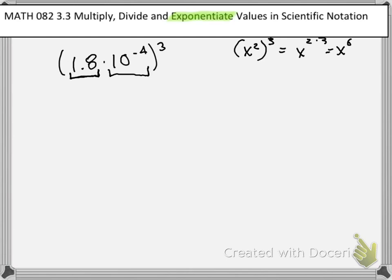So this 1.8, I believe it's called a mantissa. You don't necessarily need to know that term. We are going to be raising that to the third power. We will also be taking the expression 10 to the negative 4th and cubing that as well.